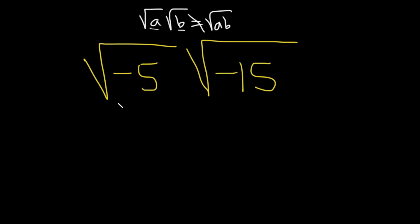So what you need to do first is convert these into i's. So whenever you have this, this becomes this. And the reason is, let me just explain it down here. If you have the square root of negative 5, this is the square root of negative 1 times 5.